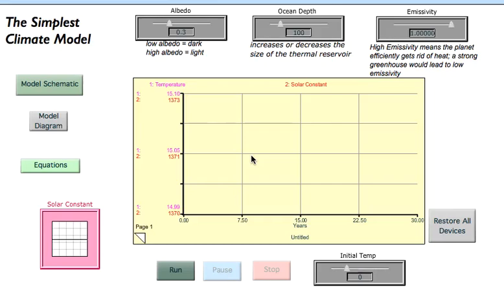For problem number four, we're going to see what happens to the climate model in response to a brief change in the solar constant. We're going to increase the solar constant for a little bit and see how the model reacts.